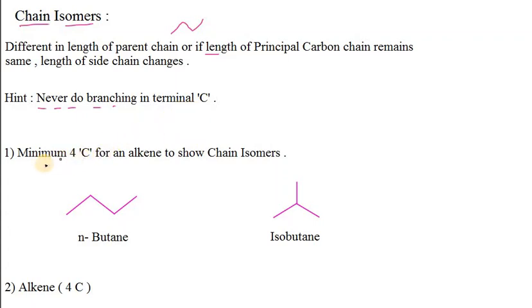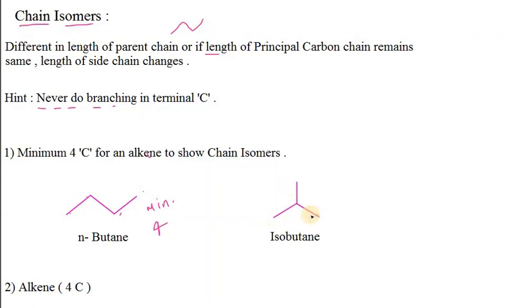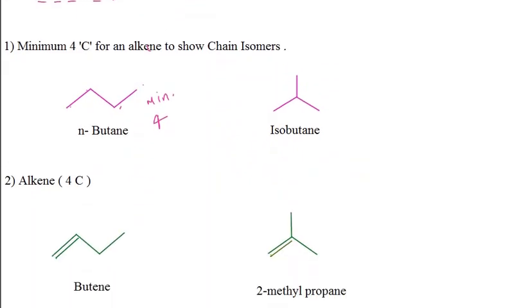Now let's see. If we talk about alkane, minimum 4 carbons are needed to show chain isomerism. So we want to generate chain isomerism in alkane: 1, 2, 3, 4 — minimum 4 carbons are needed. From there we can produce — if you see here, it is isobutane, and here it is butane. These are chain isomers of each other.